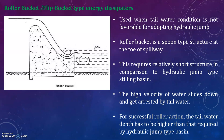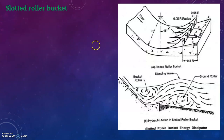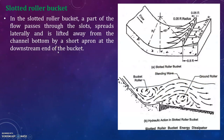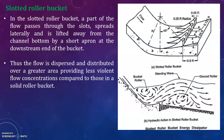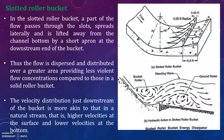In the slotted roller bucket, a part of the flow passes through the slots, spreads laterally, and is lifted away from the channel bottom by a short apron at the downstream end of the bucket. The flow is dispersed and distributed over a greater area, providing less violent flow concentrations compared to those in a solid roller bucket. The velocity distribution just downstream of the bucket is more akin to that in a natural stream — higher velocities at the surface and lower velocities at the bottom.